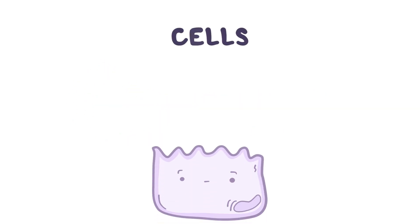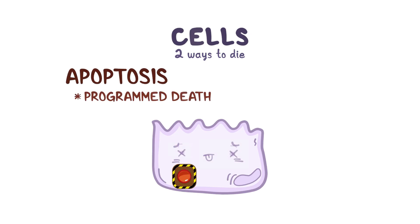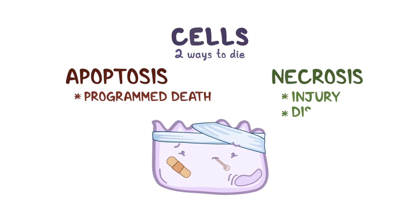Generally speaking, cells have two ways to die. One way is by apoptosis, which is a form of programmed cell death. The second way is by necrosis, which is when cells die due to injury or disease.